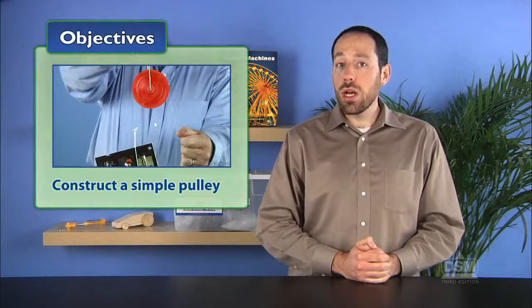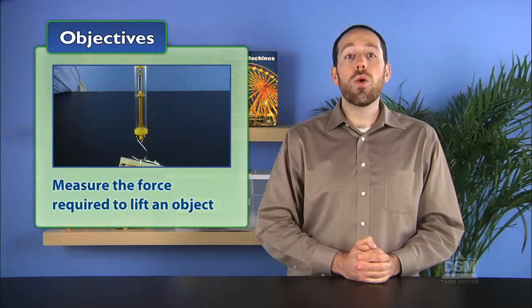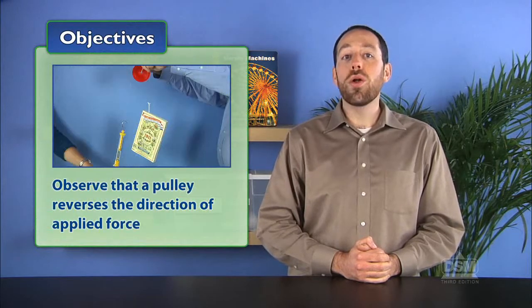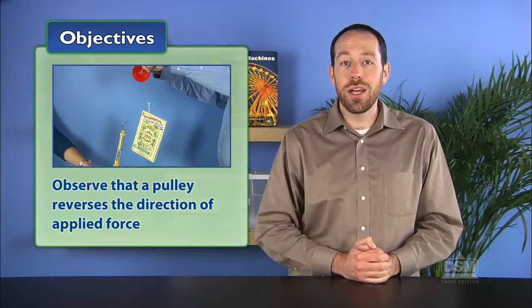In Activity 8, Pulleys, students examine a third type of simple machine, the pulley. They first observe how a pulley redirects force in order to lift an object. Students then construct a simple pulley, measure the force required to lift an object with and without the use of a pulley, and finally observe that a pulley reverses the direction of applied force.